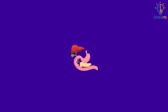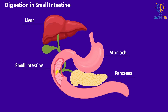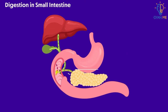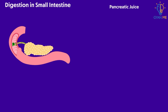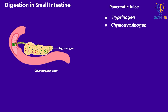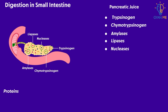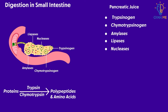In the small intestine, chyme comes in contact with three different secretions, including pancreatic juice. Pancreatic juice contains inactive enzymes like trypsinogen, chymotrypsinogen, amylases, lipases, and nucleases. Proteins in chyme are further digested to smaller polypeptides and amino acids by trypsin and chymotrypsin, which are the active forms of trypsinogen and chymotrypsinogen.